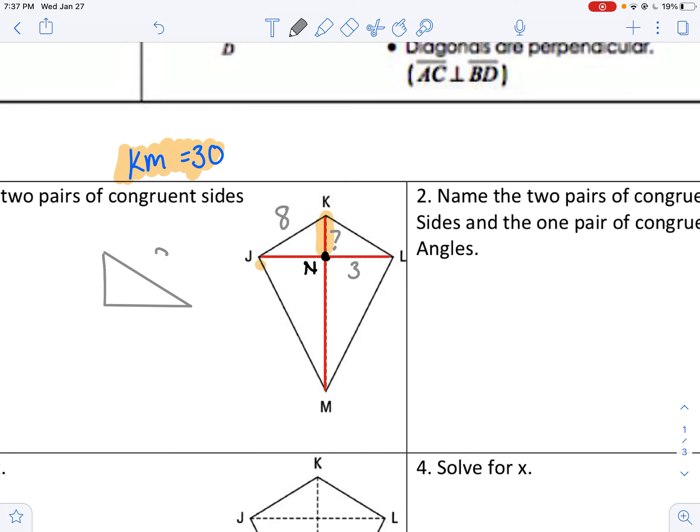So by now you should have solved it. I've got 8 and 3, and I would have x over here. Use my Pythagorean theorem. And that side, KN, would be the square root of 55. Thank you.